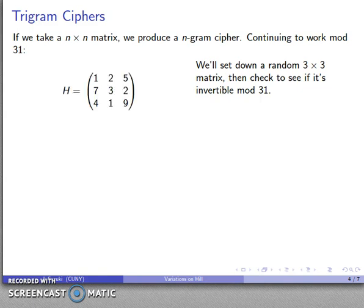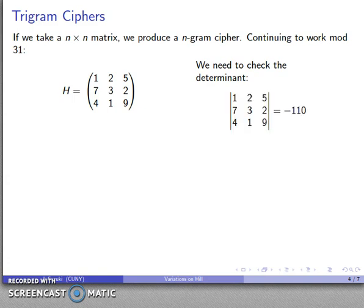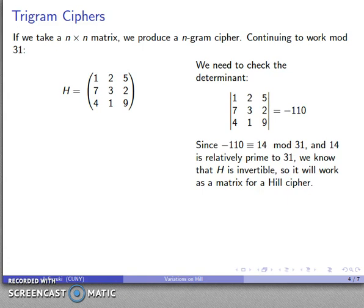So I have a trigram cipher. I do need to make sure that I have something that's invertible. So I'll throw down a random set of numbers for my matrix entries and check the determinant of this matrix. That determinant, after all the dust settles, is negative 110. But since I'm working mod 31, I need to reduce that value is 14 mod 31. And because 14 is relatively prime to 31, I know that this matrix H is going to be invertible mod 31.